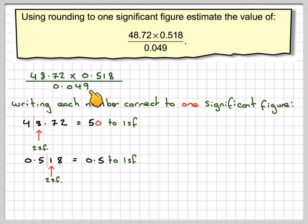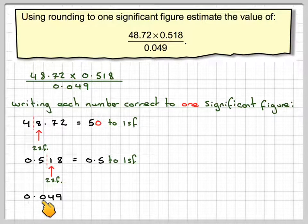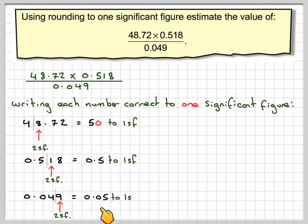And then we've got the last one, 0.049. Remember that 0 is not significant. That 0 is not significant. That's the first significant figure. That's the second. And that 9 will make that 4 a 5. So we get 0.05 to 1 significant figure.